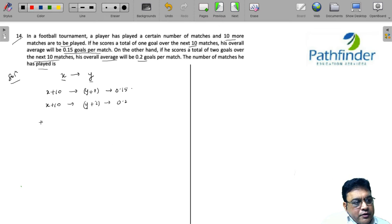Very simple equation. We have (Y plus 1) upon (X plus 10) equals 0.15 from this equation. We can simplify this and we will get Y plus 1 equals 0.15X plus 1.5. This is your equation 1.